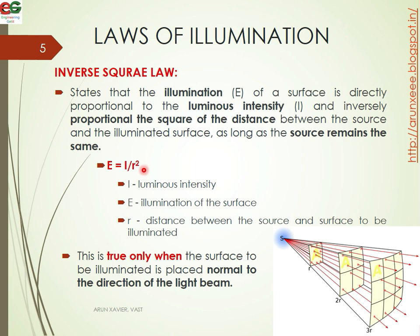E is the illumination of the surface, and r is the distance between the source and the surface to be illuminated. This is true only when the surface to be illuminated is placed normal to the direction of the light beam.